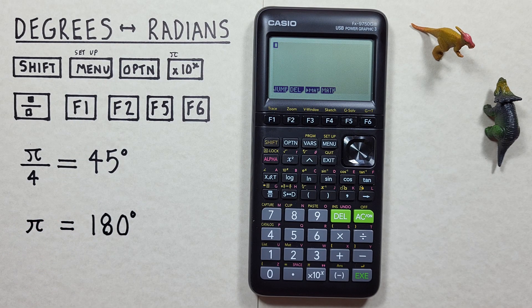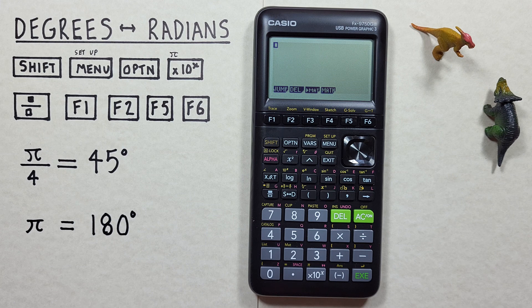Hello, and welcome to HD Calcs. I'm Rick, and in this video we're going to have a look at how we can convert between degrees and radians on the Casio FX 9750 G3 calculator.